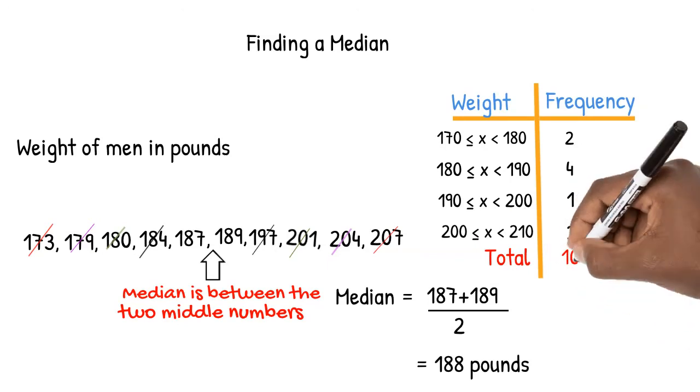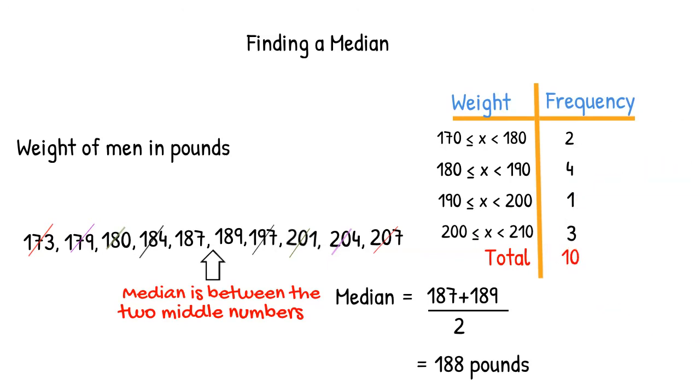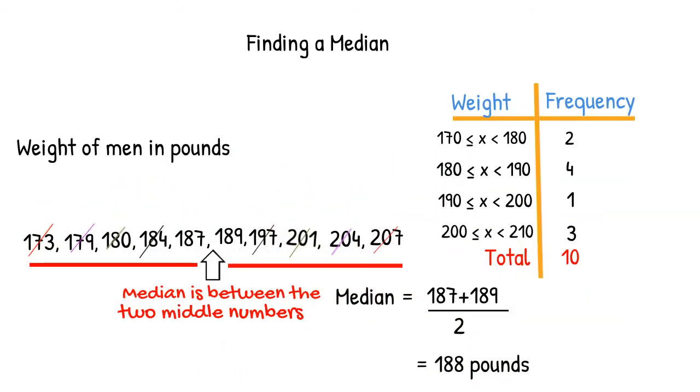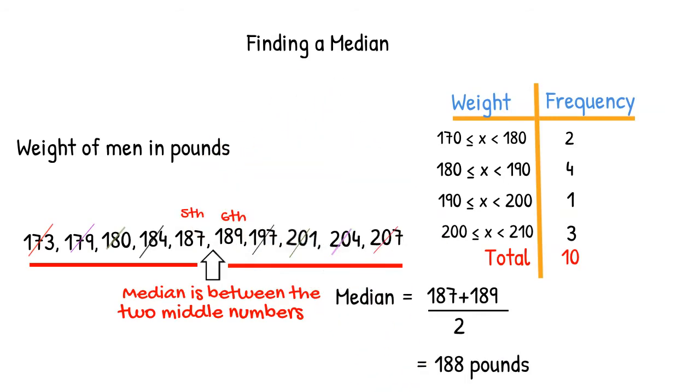and three numbers in the final category. We can think of what these 10 numbers would look like in a list. By splitting our list into two halves, we see that the median is between the fifth and the sixth numbers.